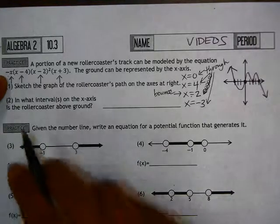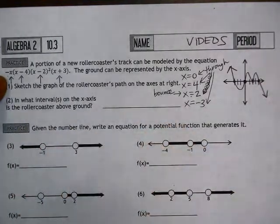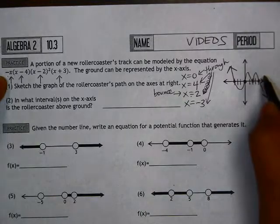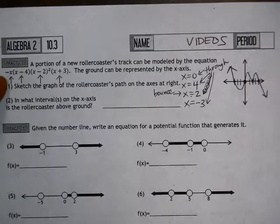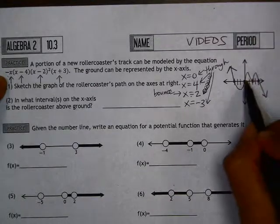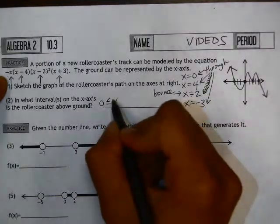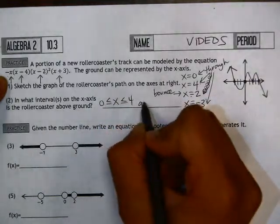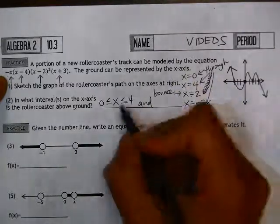In what interval on the x-axis is the roller coaster above ground? When we look at this x-axis, the roller coaster is above ground between 0 and 4, so I'm going to say x is between 0 and 4. And it's also above ground when x is less than negative 3.